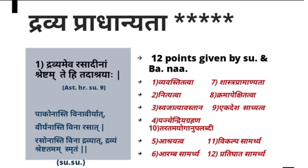Sushruta mentions: 'Pako Nasthi Vina Viryad Viryam Nasthi Vina Rasad Raso Nasthi Vina Dravyat Dravyam Shreshtatamam Smurtam' — Vipaka cannot exist without Virya; Virya cannot exist without Rasa; Rasa cannot exist without Dravya. Therefore Dravya is the base for everything and is considered Pradhana. Additionally, Sushruta and Badanta Nagarjuna together provide 12 scientific points — 9 from Sushruta and 3 added by Badanta Nagarjuna — to prove Dravya Pradhanyata.